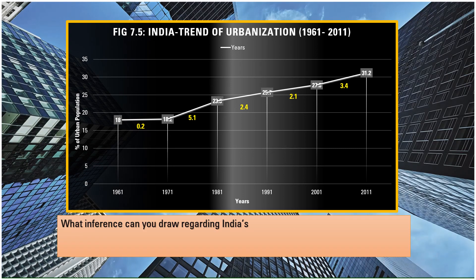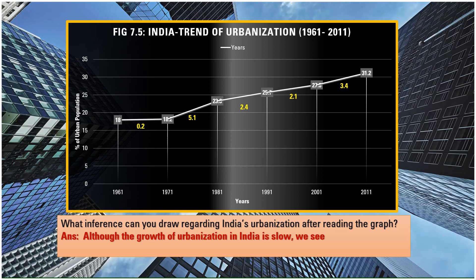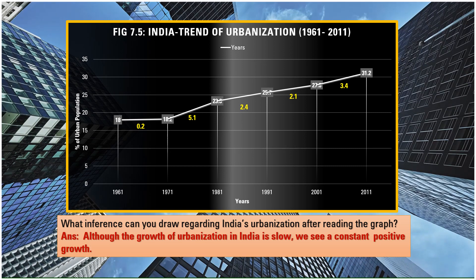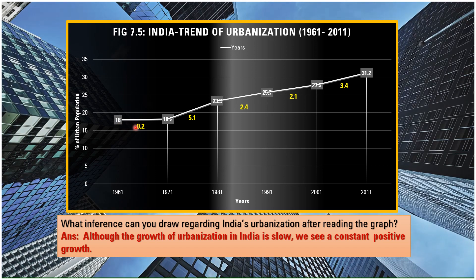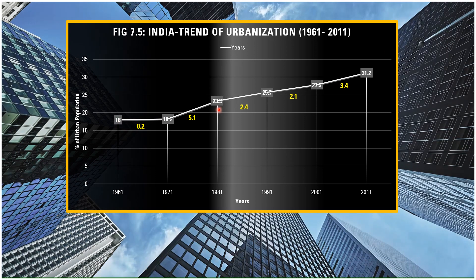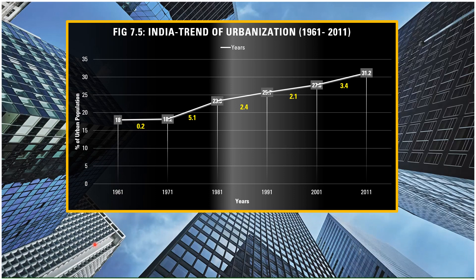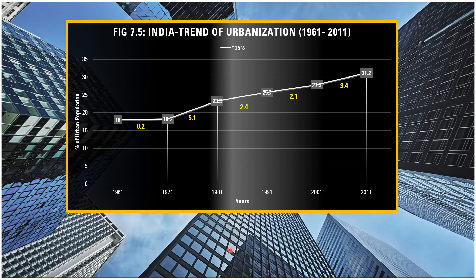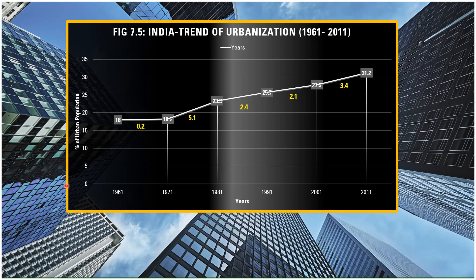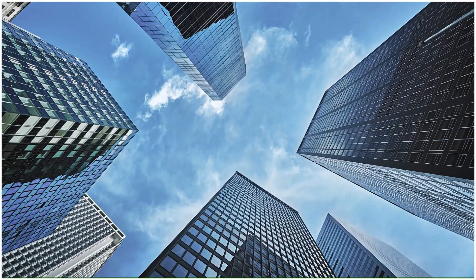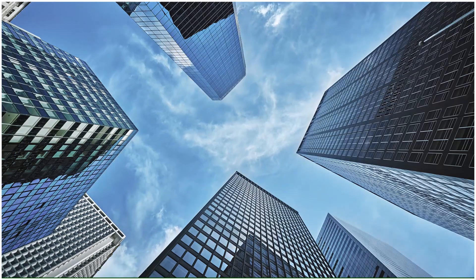The next question: what inference can you draw regarding India's urbanization after reading the graph? From the graph we see that India's urban population is growing, but not very fast — at a slow and steady pace. Although the growth of urbanization in India is slow, we see a constant positive growth in the percentage of urban population. From figure 7.5, we understand that urbanization in India is slow.